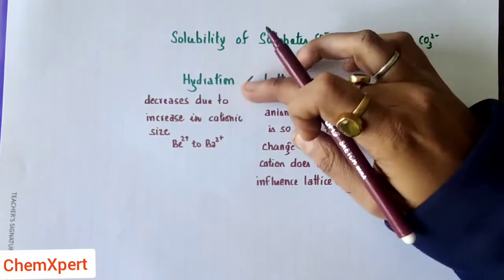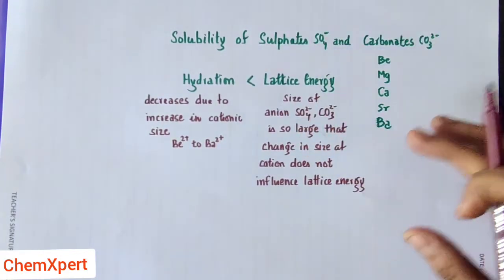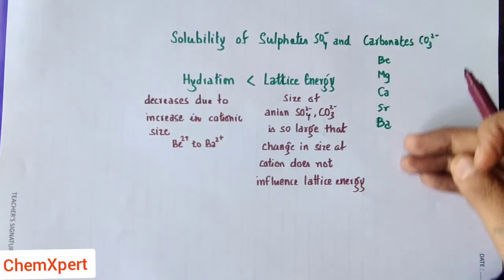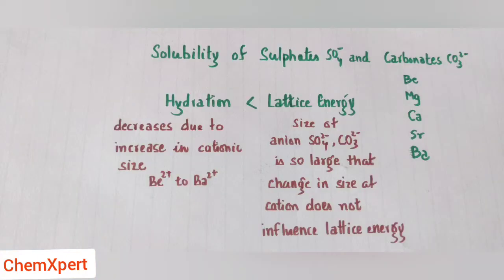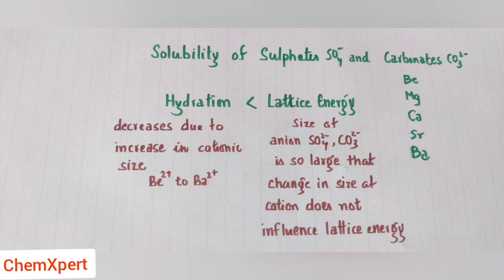So we can say lattice energy is greater than hydration energy, hence solubility decreases down the group. As we move down the group, solubility in water decreases from beryllium sulfate to barium sulfate. Similarly, in the case of carbonates, solubility in water decreases from beryllium carbonate to barium carbonate.